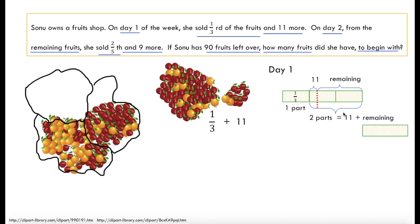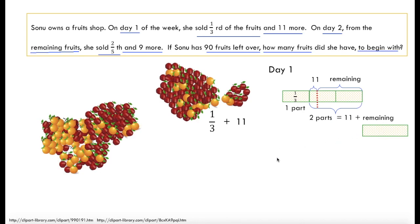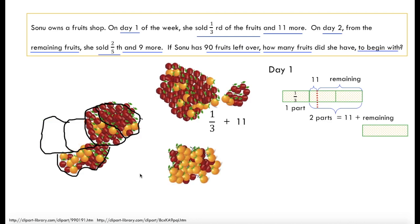The remaining part — if we assume this is 11 — the remaining fruits are these. Out of the remaining, on day 2 she sold two fifths. So we take 5 equal parts from the remaining fruits. She sold 2 fifths, so 2 parts are gone out of 5. This is the fraction two fifths of the fruits.